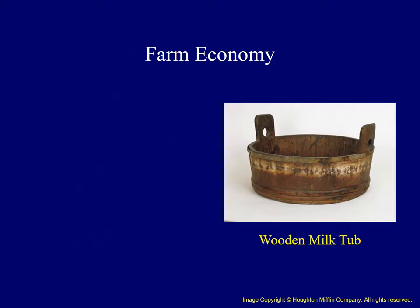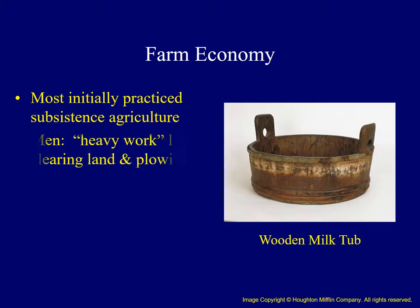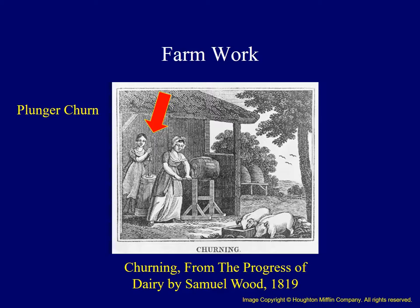Most pioneers traveled in family units and initially practiced subsistence agriculture. Men were usually responsible for much of the heavy work such as clearing trees and plowing fields. Women had a wide range of different chores which never seemed to end, one of which involved milking cows. They might place milk in a wooden tub where it would cool for one or two days, and cream could then be skimmed after it rose to the top. During the late 18th century, farm women shifted from the plunger churn to the more efficient barrel churn, which increased their production of butter.